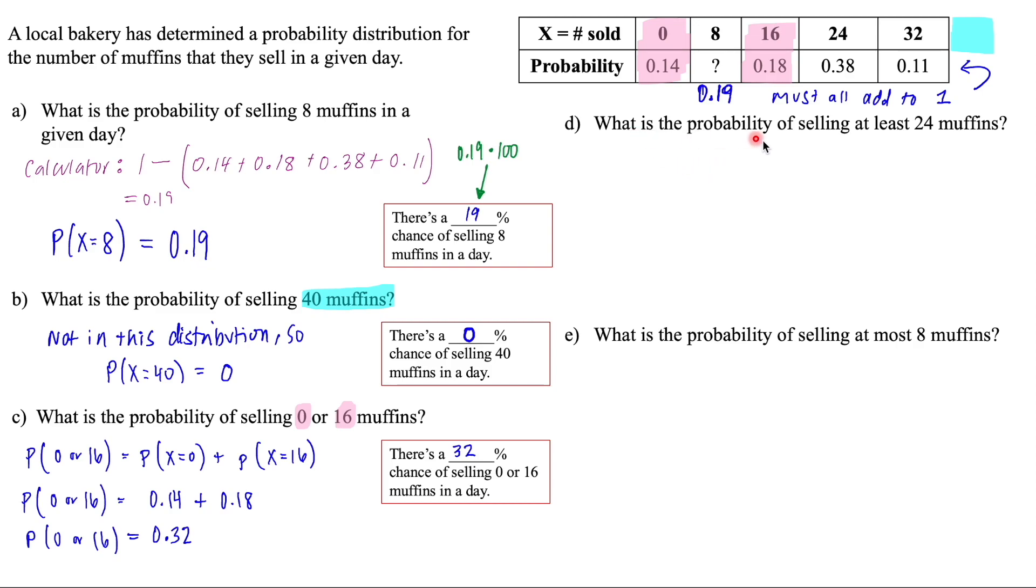Next question says, what is the probability of selling at least 24 muffins? So when we read that, we need to think about what does that mean for the probability? Well, this is the symbol that we're using here for the at least symbol. So X is at least or is greater than or equal to 24.